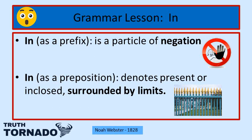Let's start with a grammar lesson for the word 'in.' In as a prefix is a particle of negation, and negation means to repel. In as a preposition denotes present or enclosed, and enclosed means to be fenced around, surrounded by limits. Picture a house completely enclosed and surrounded by a fence. So 'in' means completely enclosed.